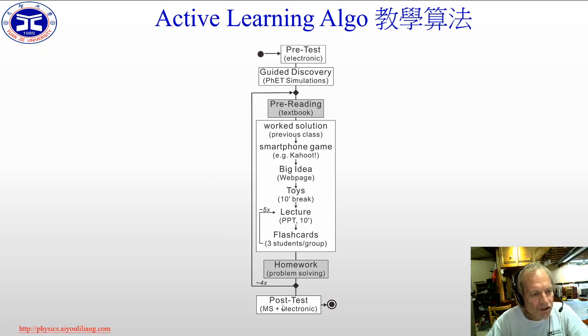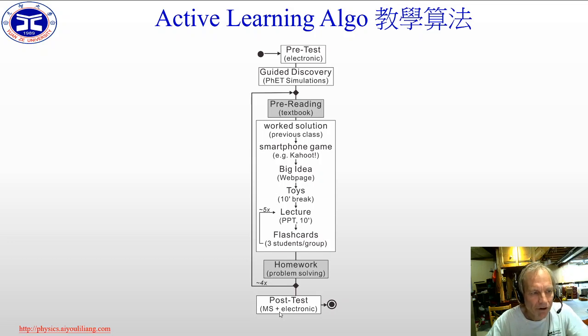We then have a post-test, which is both electronic and paper. That's basically how we do one unit, and the class will have four units.